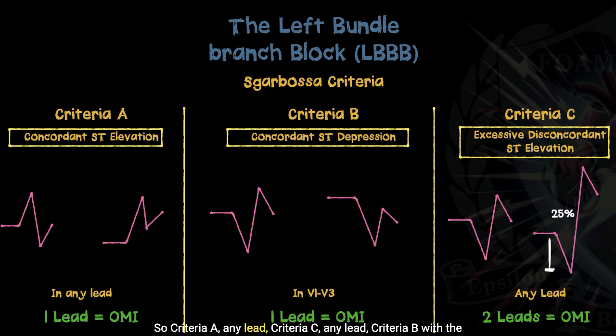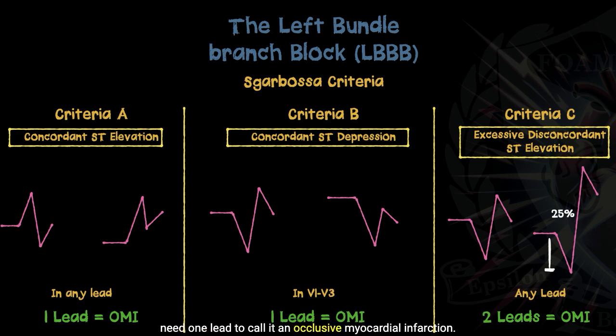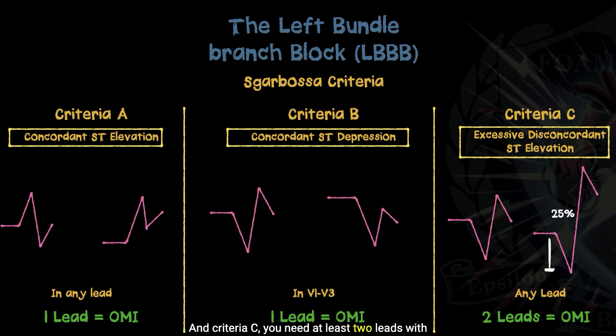Criteria C, we are looking for in any lead. So criteria A — any lead. Criteria C — any lead. Criteria B, with the negative deflecting QRS complexes, we're looking at V1 through V3. The textbooks assign a point value to consider this an acute myocardial infarction, but to simplify it: criteria A, you need one lead to call it an occlusive myocardial infarction; criteria B, you need one lead to call this an acute myocardial infarction; and criteria C, you need at least two leads with excessively discordant ST segment elevation.